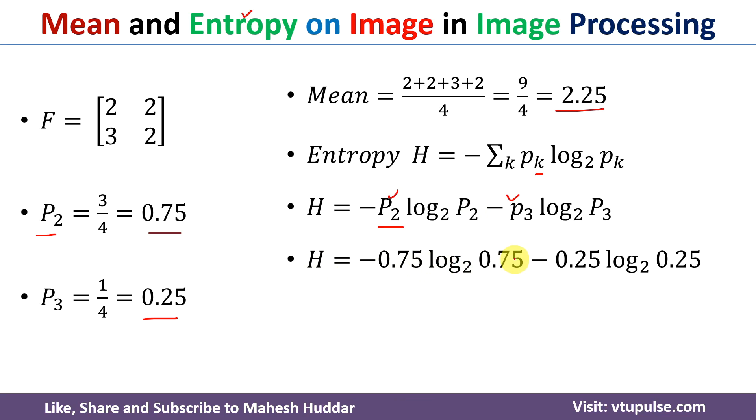It will become minus 0.75 log 0.75 to the base 2 minus 0.25 log 0.25 to the base 2. Now once you solve it, you will get 0.311 plus 0.5 and once you solve this equation, you will get H is equivalent to 0.811. So for the given image, the mean is equivalent to 2.25 and the entropy is equivalent to 0.811.